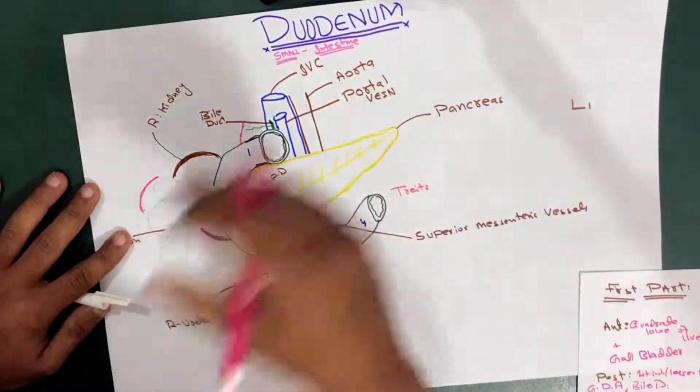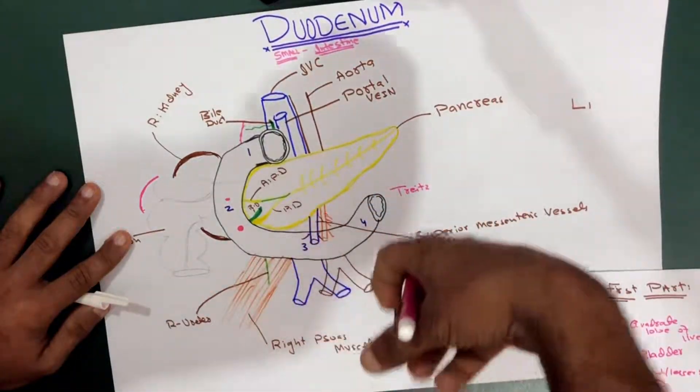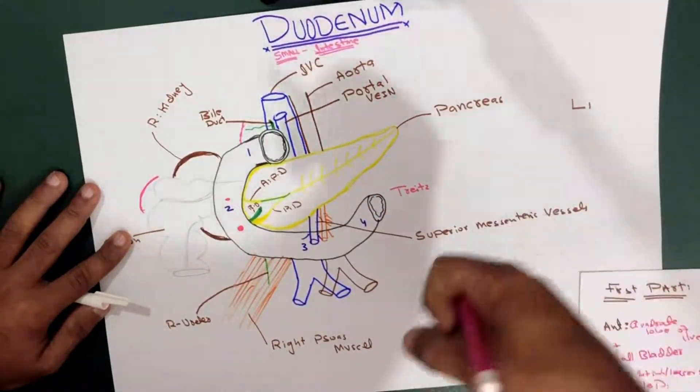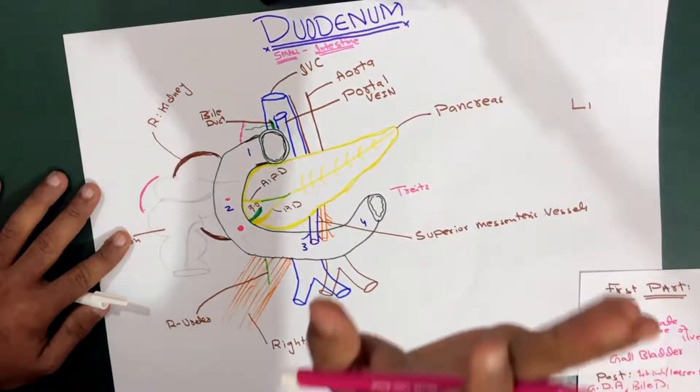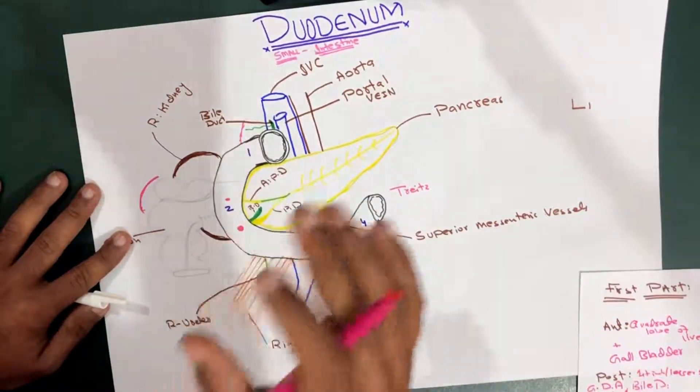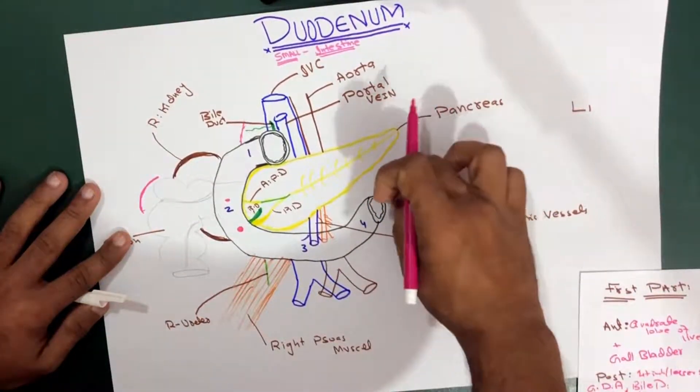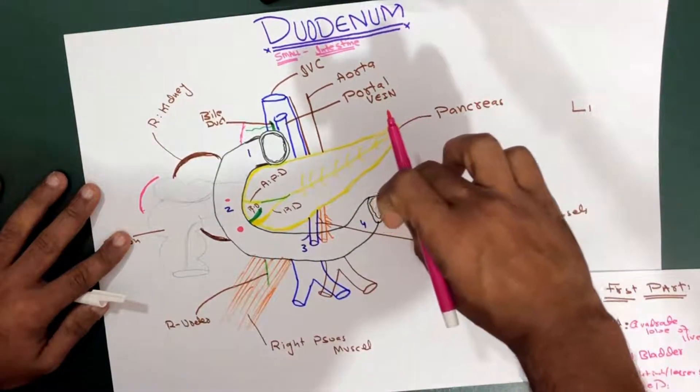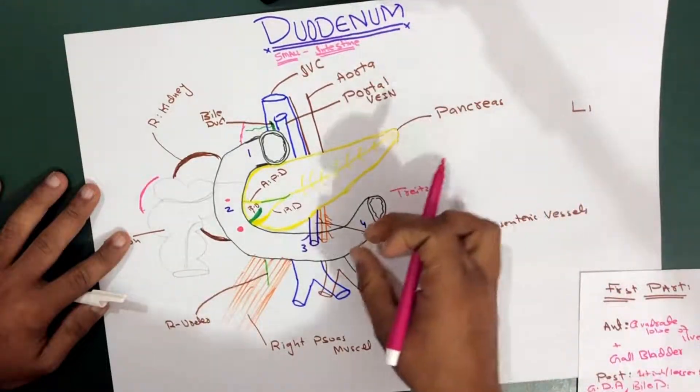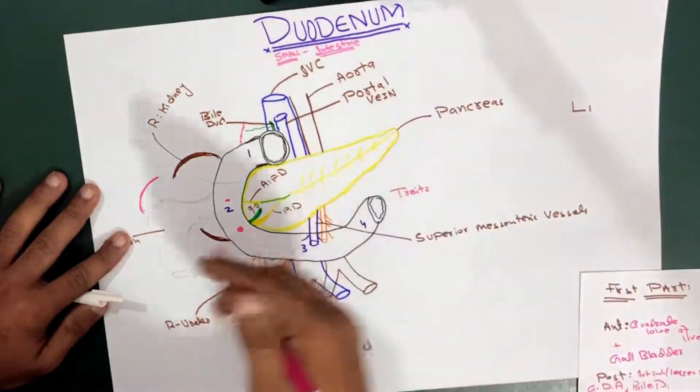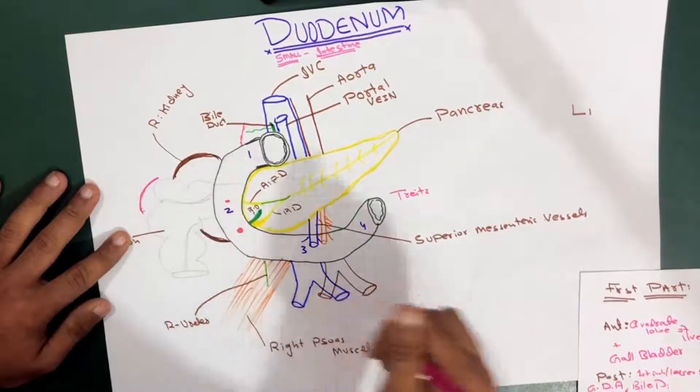This ligament is a peritoneal folding which holds the duodenal flexure by attaching it to the right crus of the diaphragm. So there is a ligament attaching to the duodenal flexure, and upward it attaches to the diaphragm at the right crus.